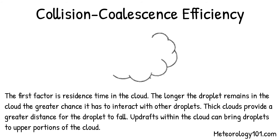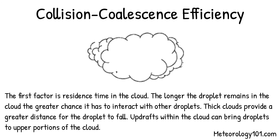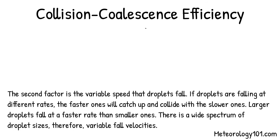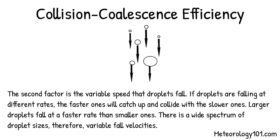Collision coalescence efficiency: the first factor is residence time in the cloud. The longer the droplet remains in the cloud, the greater chance it has to interact with other droplets. Thick clouds provide a greater distance for the droplet to fall, and updrafts within the cloud can bring droplets to upper portions of the cloud. The second factor is the variable speed that droplets fall. If droplets are falling at different rates, the faster ones will catch up and collide with the slower ones. Larger droplets fall at a faster rate than smaller ones, resulting in a wide spectrum of droplet sizes and variable fall velocities.